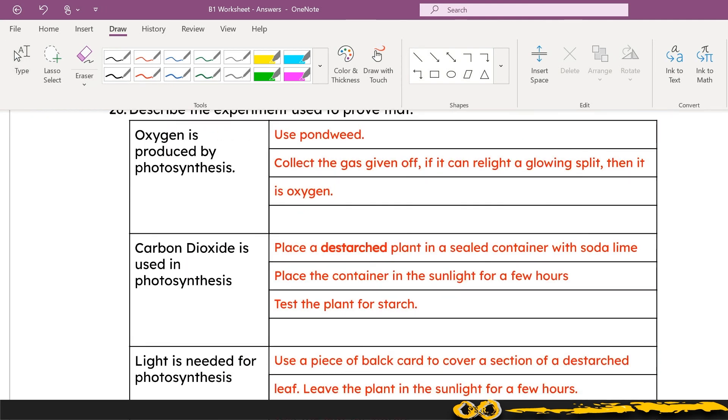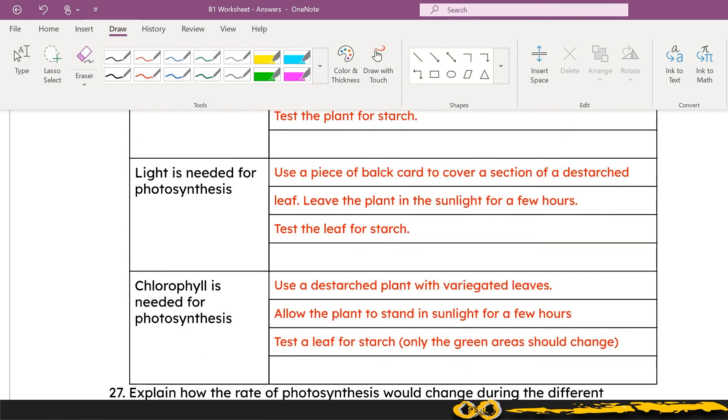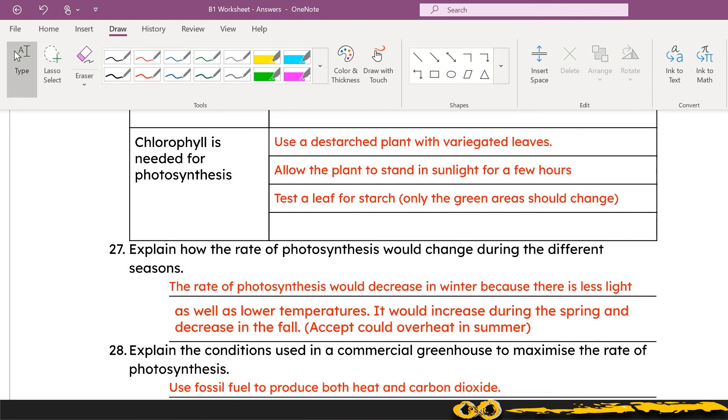The experiments for the parts of photosynthesis are often asked as exam questions, so make sure you understand the key points there. So what's being used, how is it proving, make sure you talk about things like a destarched plant if the plant needs to be destarched, so that it's really clear to the examiner that you understand how that experiment has to be carried out and why the results that you might obtain from the experiment are valid.